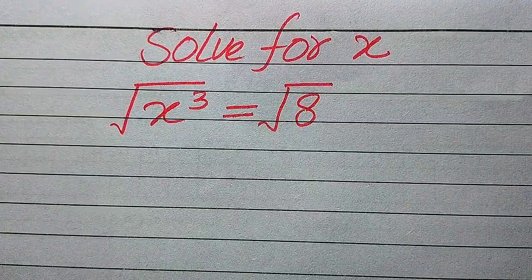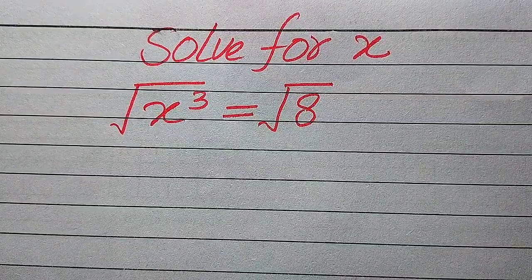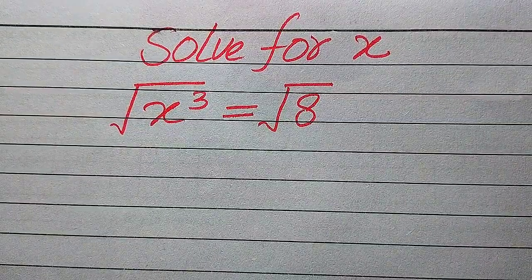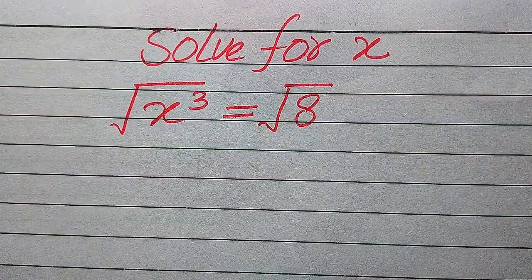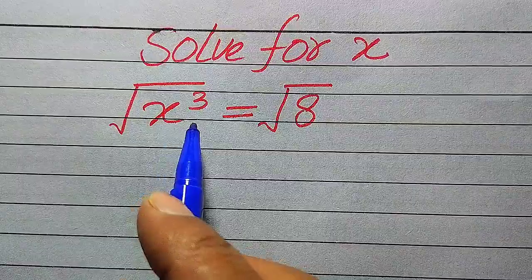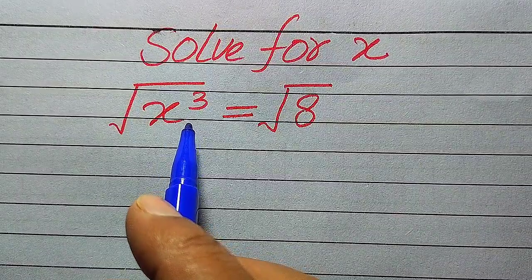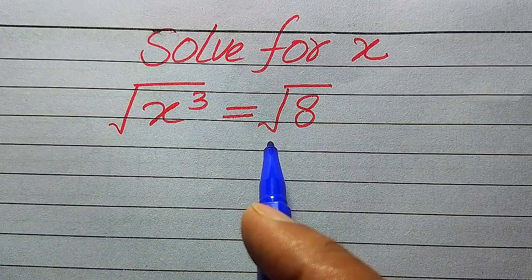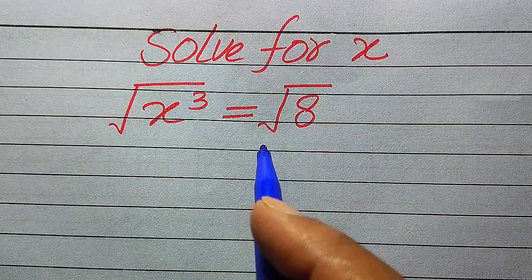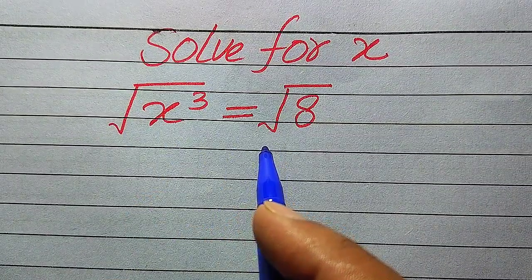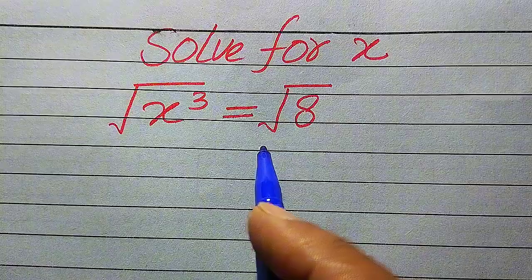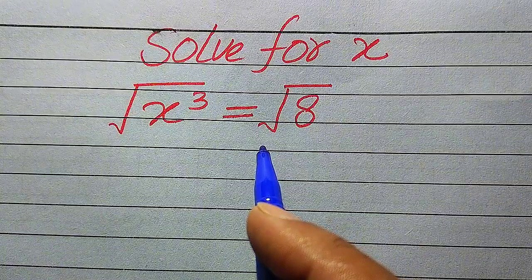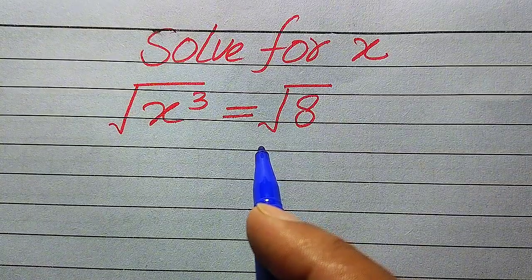Hello everyone. How to solve this problem for the values of x: if we have the square root of x cubed as a whole equals the square root of 8, we solve this problem for all the values of x.